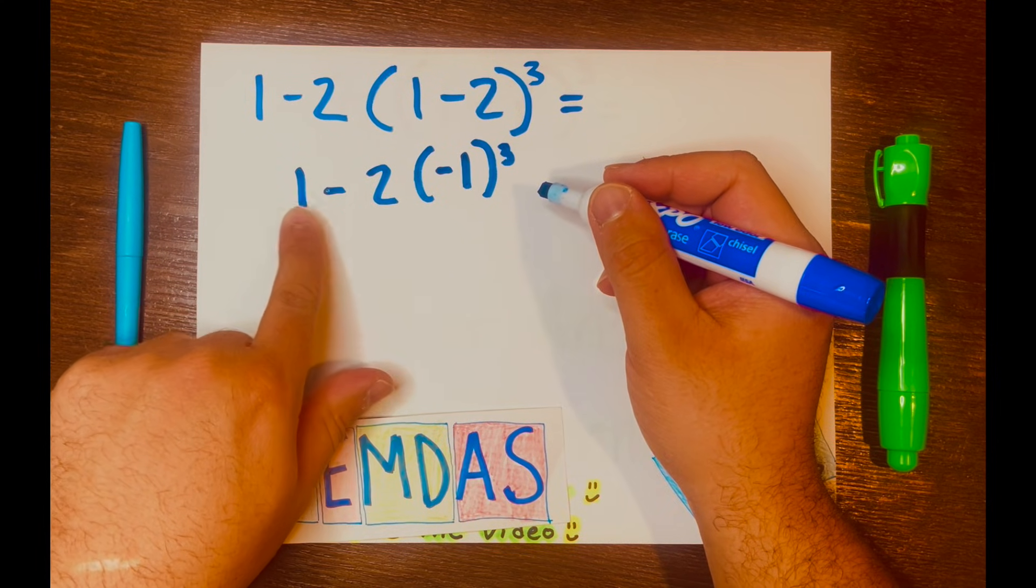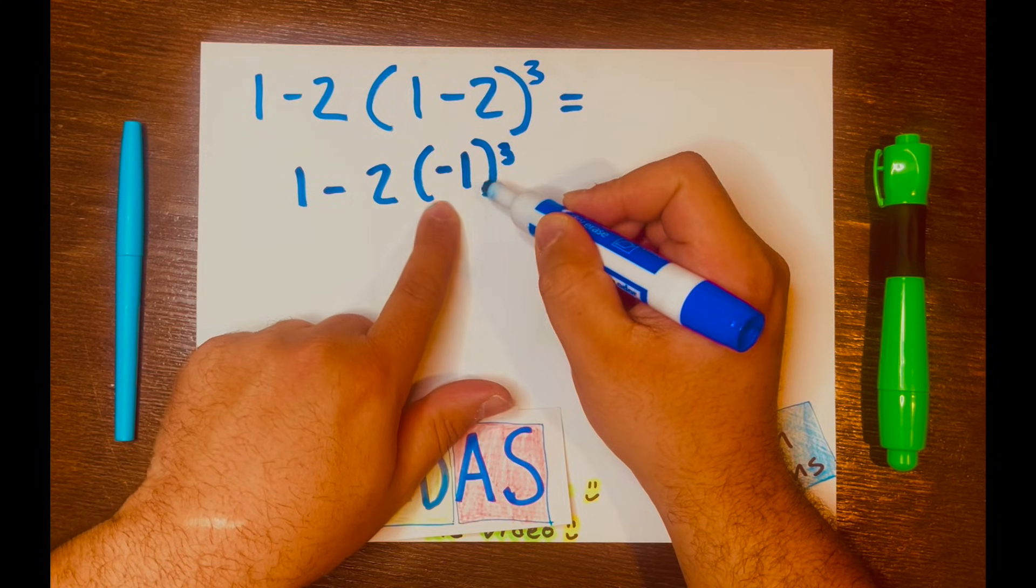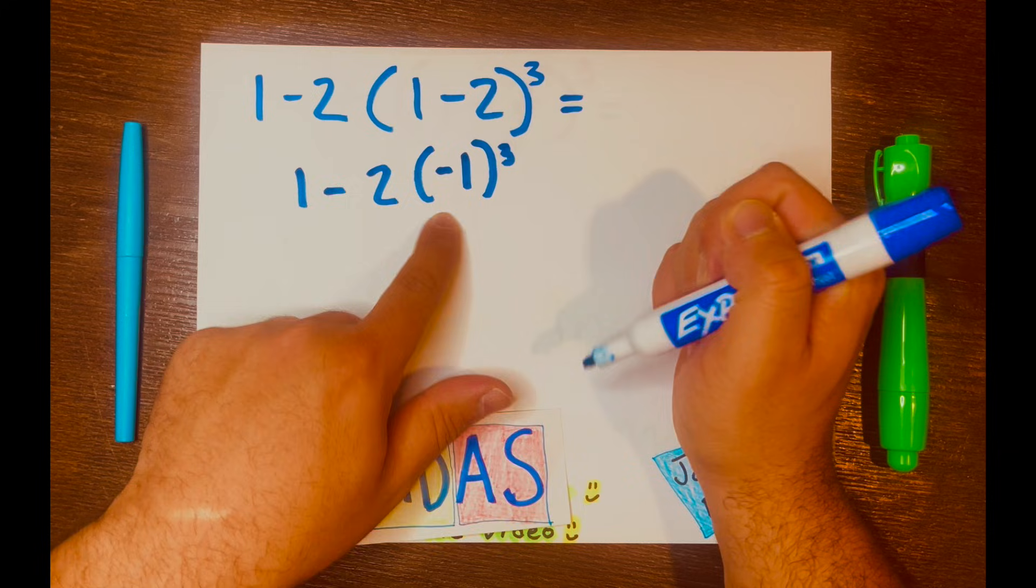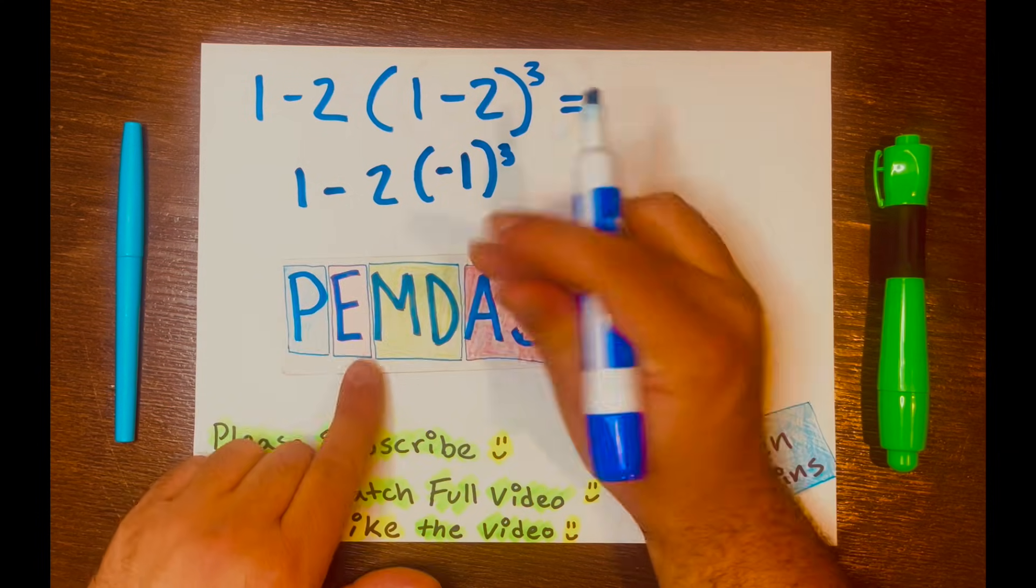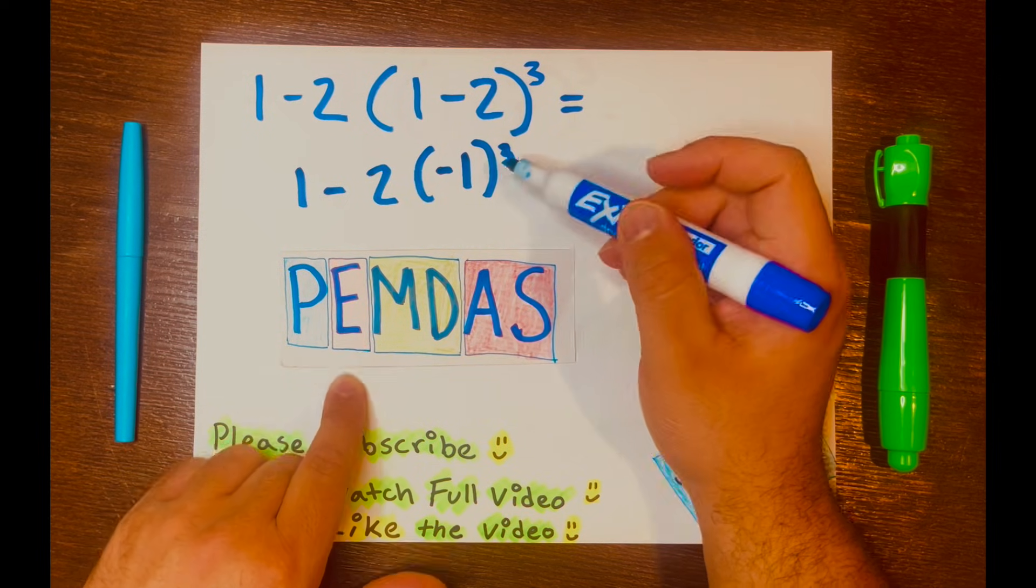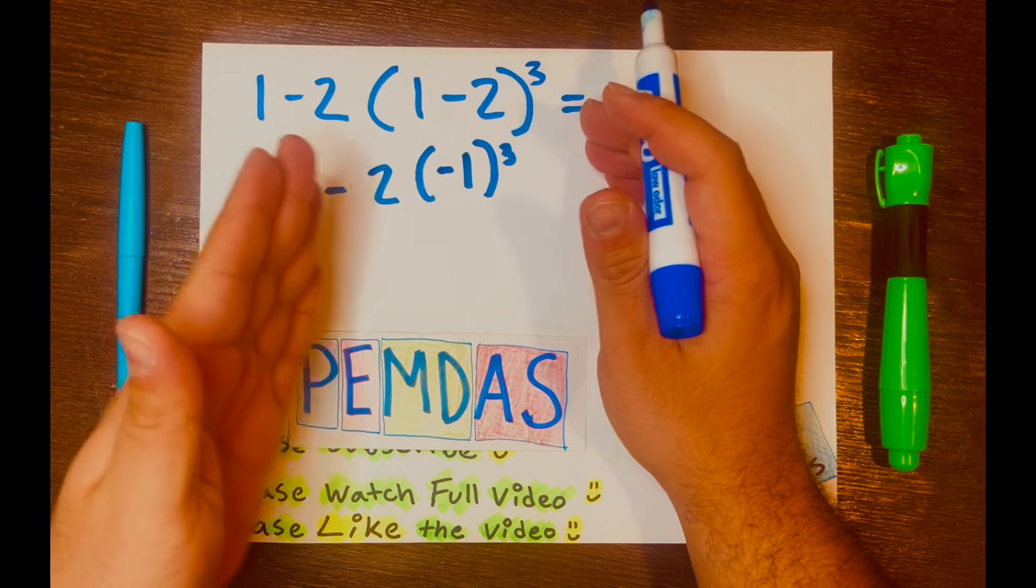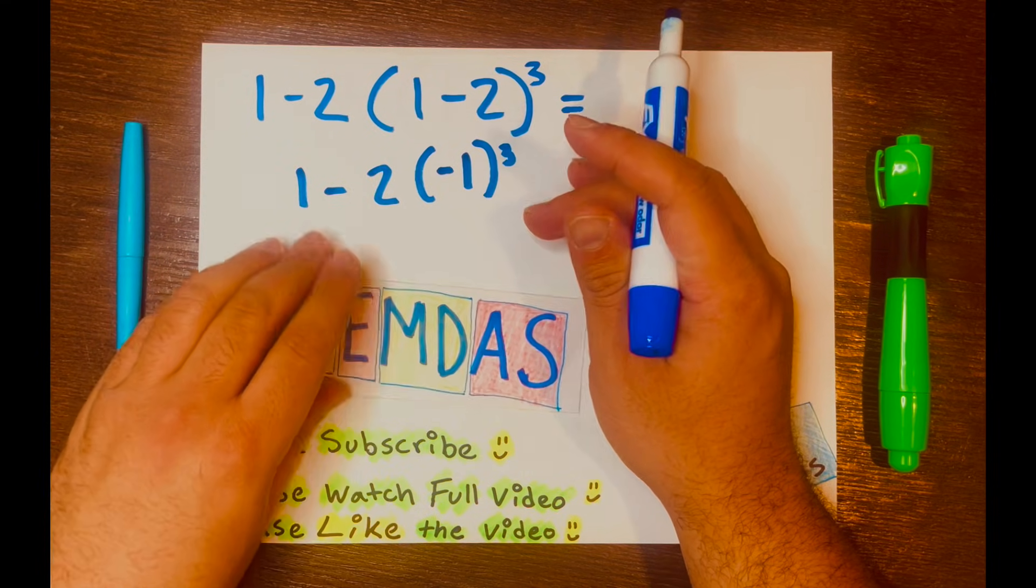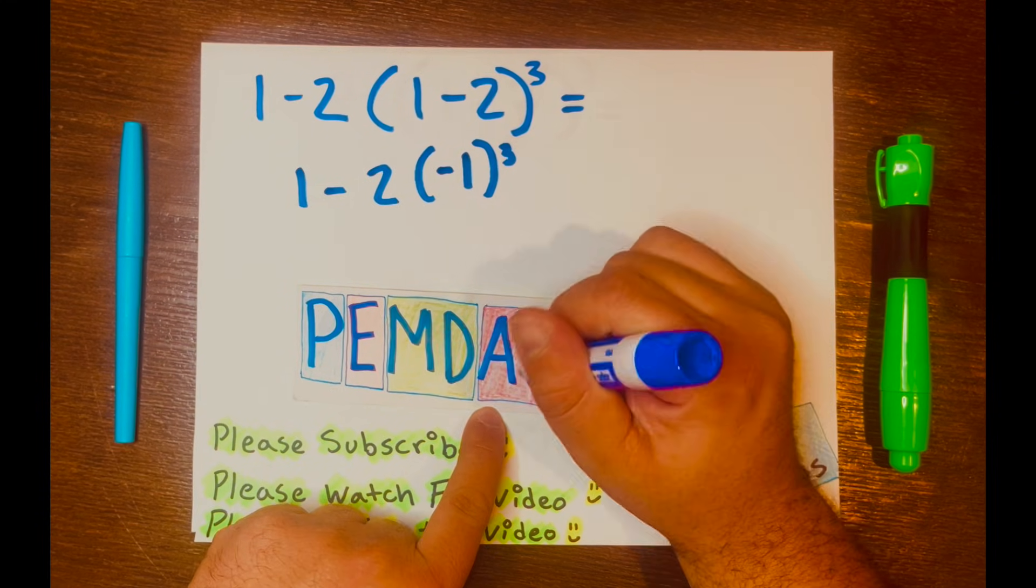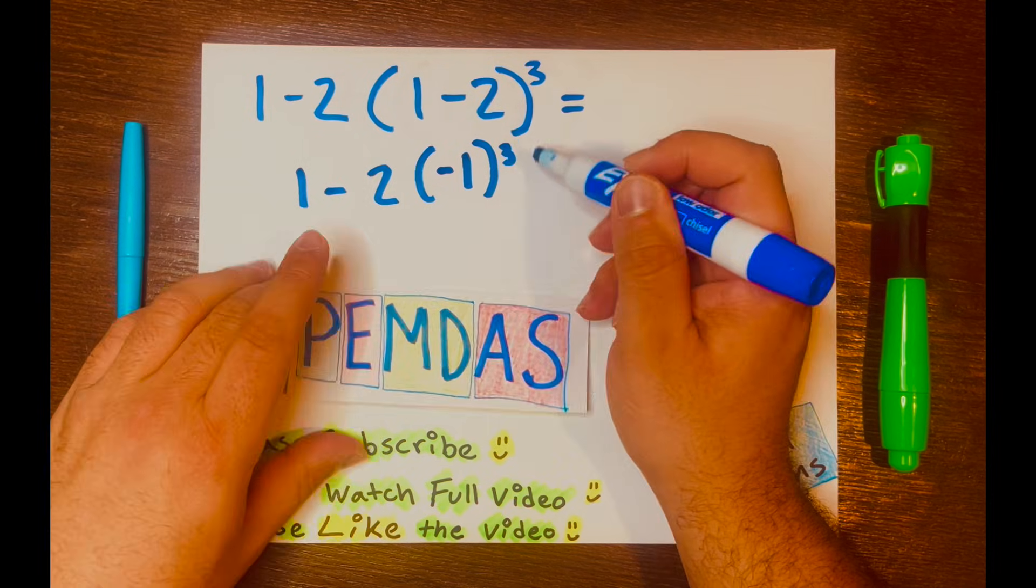Now we have 1 minus 2, and then you have negative 1 inside these parentheses with an exponent of 3. Exponent will be the second one to solve. And remember that you are solving the problem from left to right according to PEMDAS. Subtraction will not go first. It's in the lower level of PEMDAS. And exponent will be the second one.